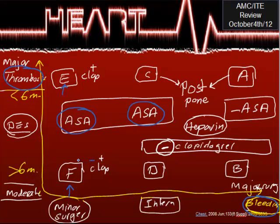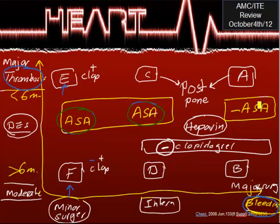For intermediate surgery — such as GI surgery, bronchoscopy, or endoscopy — still continue aspirin. In general, you can continue aspirin whether it is intermediate or low-risk bleeding. The only exception is high-risk bleeding, where you have the choice to stop aspirin.